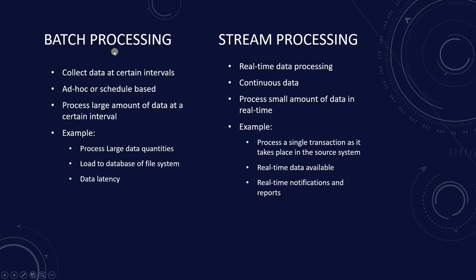If we closely examine batch versus stream processing, we can conclude that batch processing collects data over time and sends it for processing once collected. It is generally meant for large data quantities that are not time-sensitive. Stream processing continuously collects data and processes it fast, piece by piece, and is typically meant for data needed immediately. With batch processing, data is collected in batches and fed into an analytic system — a batch being a group of data points collected within a given time period, 24 hours in our case. Unlike stream processing, batch processing does not immediately feed data into an analytic system.